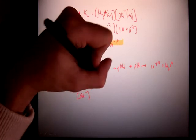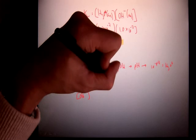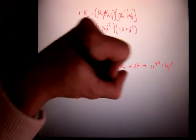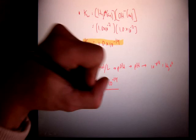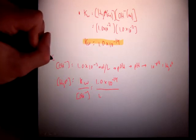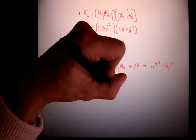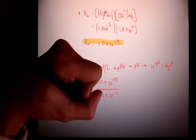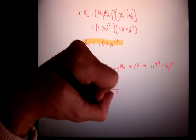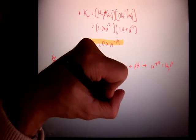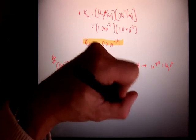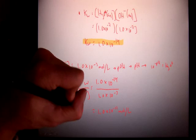Filling in my numbers, 1.0 times 10 to the negative 14 is what Kw always equals, divided by 1.0 times 10 to the negative 3 moles per liter. That would equate to 1.0 times 10 to the negative 11 moles per liter. Done.